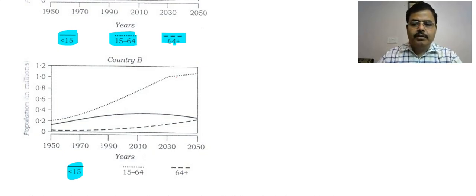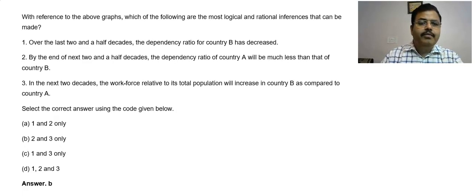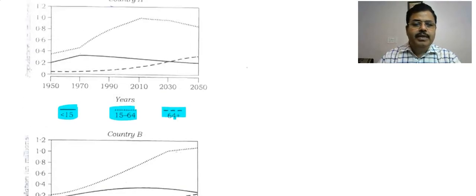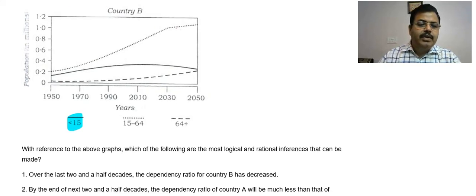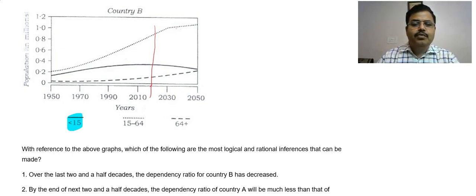Now, with reference to the above graph, which of the following are the most logical and rational inferences that can be made? Over the last two and a half decades, the dependency ratio of B has decreased. The dependency ratio means the ratio of dependents to the working population. Over the last two and a half decades, the dependency ratio in B has decreased.